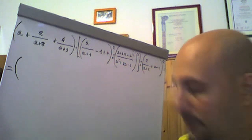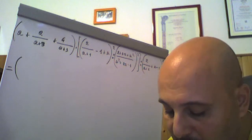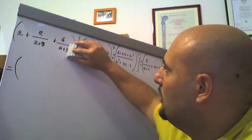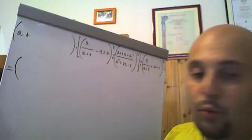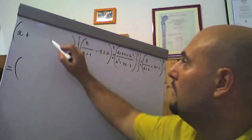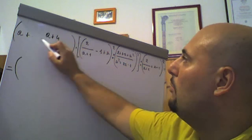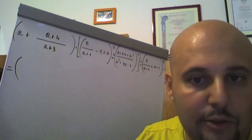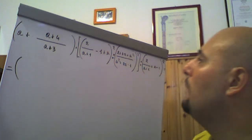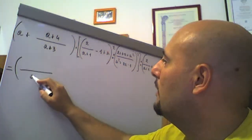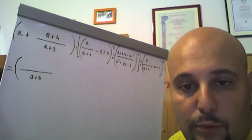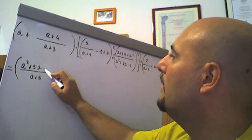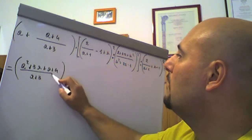Perché si sommano due frazioni algebriche che hanno lo stesso denominatore, quindi pertanto si può riscrivere questa come a più 4 fratto a più 3. Ricordate: quando si sommano quantità aventi lo stesso denominatore, è sufficiente sommare i rispettivi numeratori. Quindi in questo caso a più 4. Il minimo comune multiplo qui è a più 3. Diviso 1, a più 3 per a: a per a è a al quadrato, 3 per a è 3a. Più a più 4.